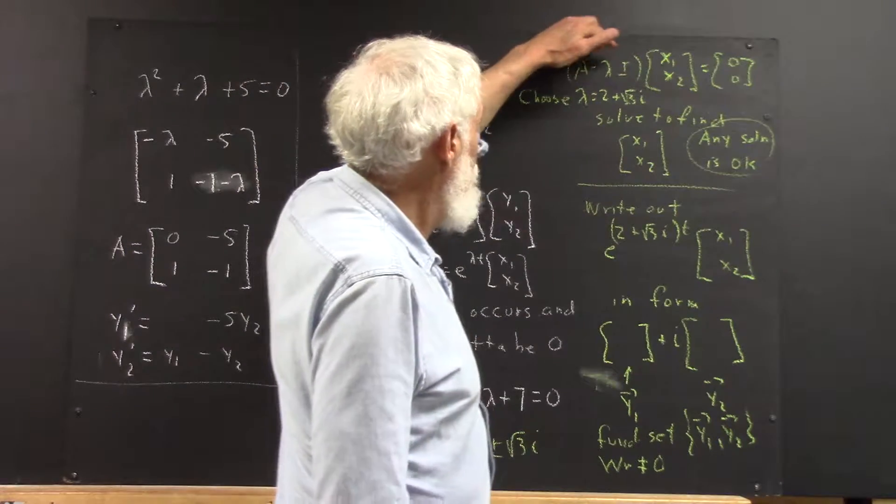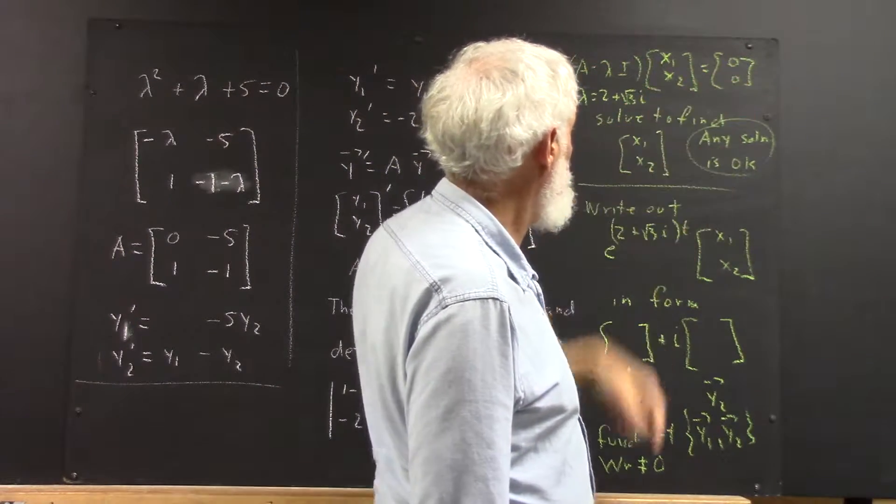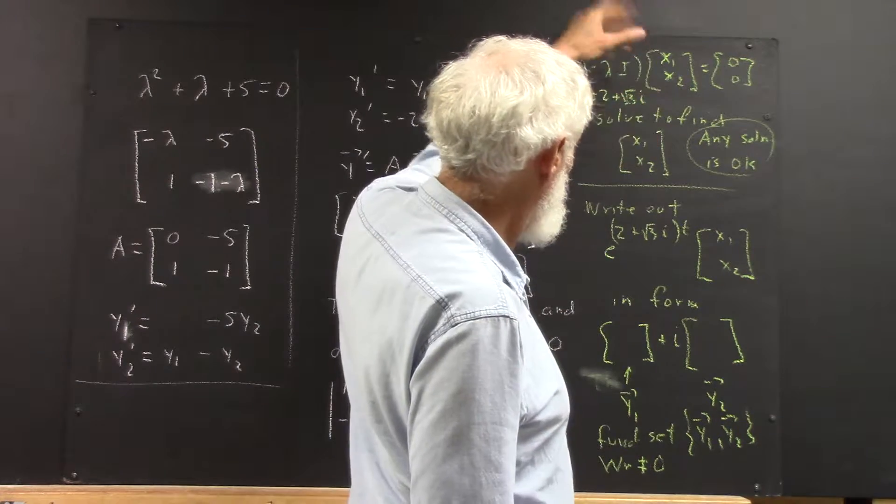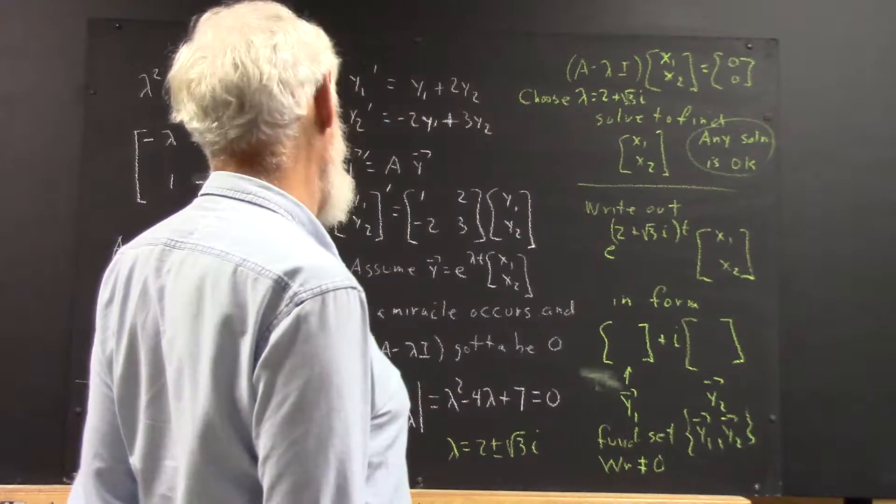So now we're going to have A minus lambda I times x1, x2 is going to have to equal 0, 0. There's a step in there where we divide by the e to the lambda t, but that's always going to be the case.